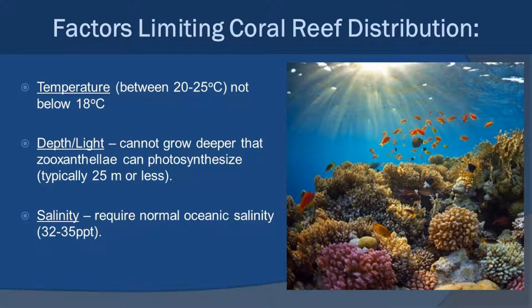Corals distributed globally are governed by a few key factors. Temperature needs to be somewhere between 20 and 25 degrees Celsius; below 18 degrees Celsius, hermatypic reef-building corals really aren't going to survive. Depth and light are also important — since photosynthetic algae live in the coral tissue, they need sunlight, so corals generally grow at 25 meters or less. The murkier the water, the shallower the coral needs to be. Salinity is also a factor; corals prefer regular oceanic salinity of 32 to 35 parts per thousand without much freshwater input.